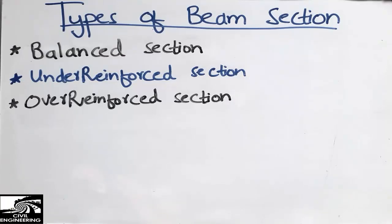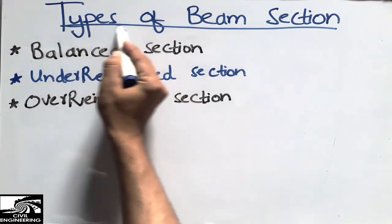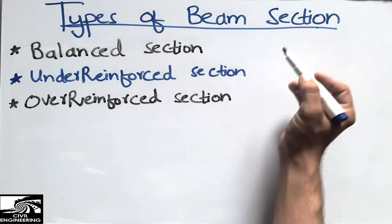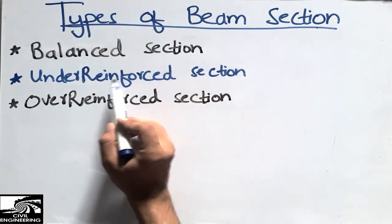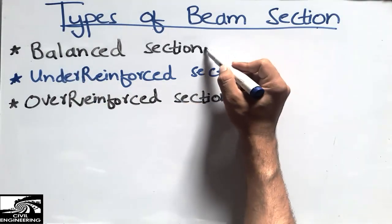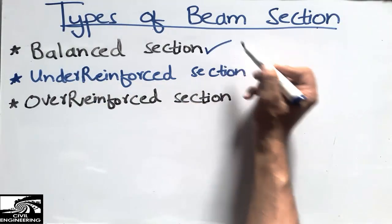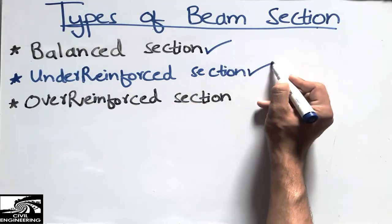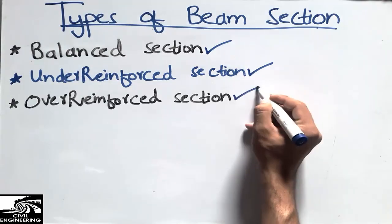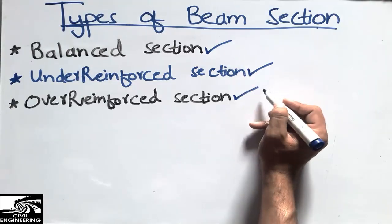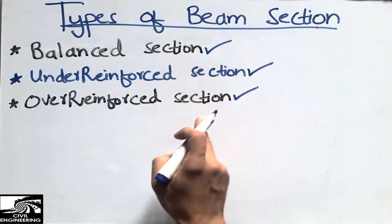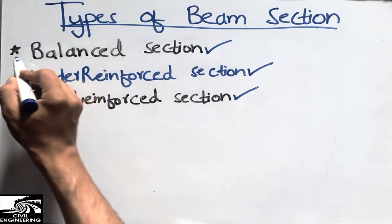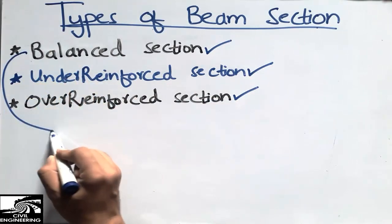Welcome back to the C1 Engineering YouTube channel. Please subscribe for daily C1 Engineering updates. Today our topic is about the types of beam sections. Basically there are three types: the first is the balanced section, the second is the under-reinforced beam section, and the third is the over-reinforced beam section. I will discuss each section one by one.